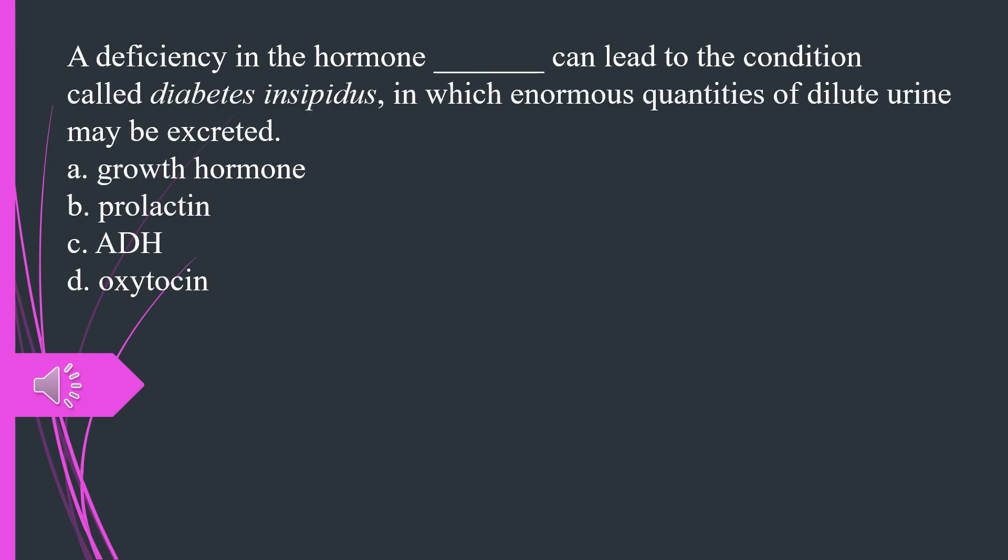A deficiency in the what hormone can lead to the condition called diabetes insipidus, in which enormous quantities of dilute urine may be excreted. A. Growth hormone B. Prolactin C. ADH D. Oxytocin. The answer is C, ADH.